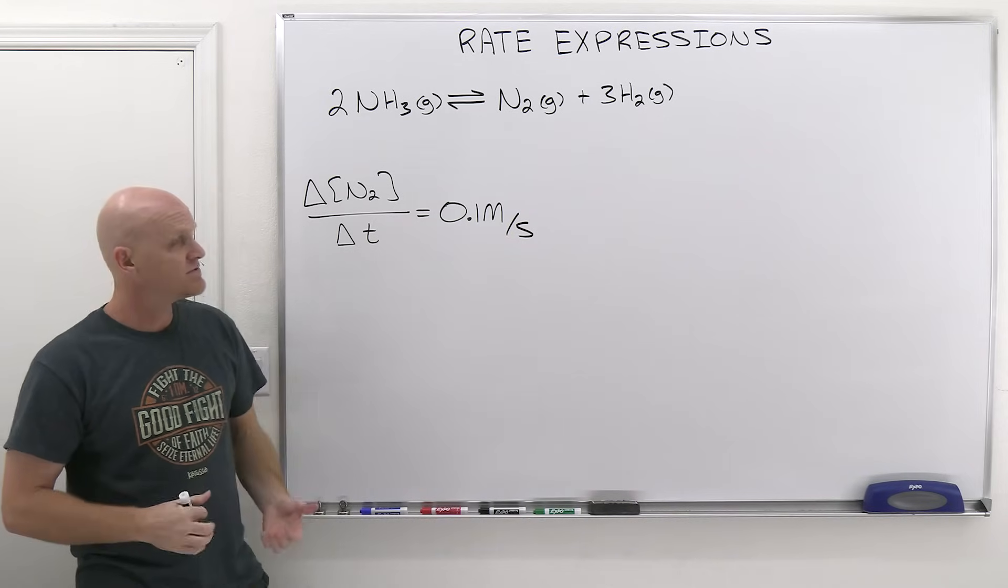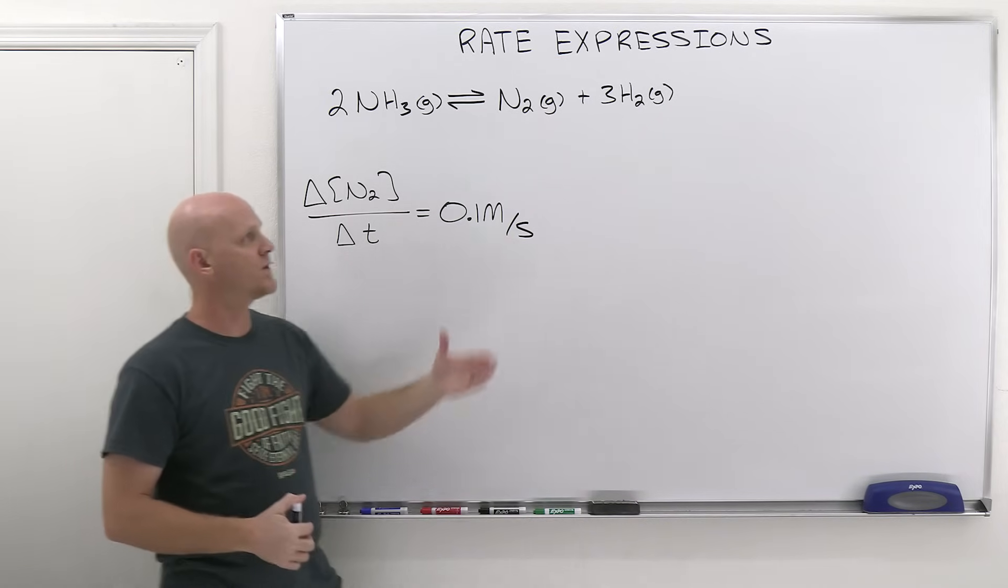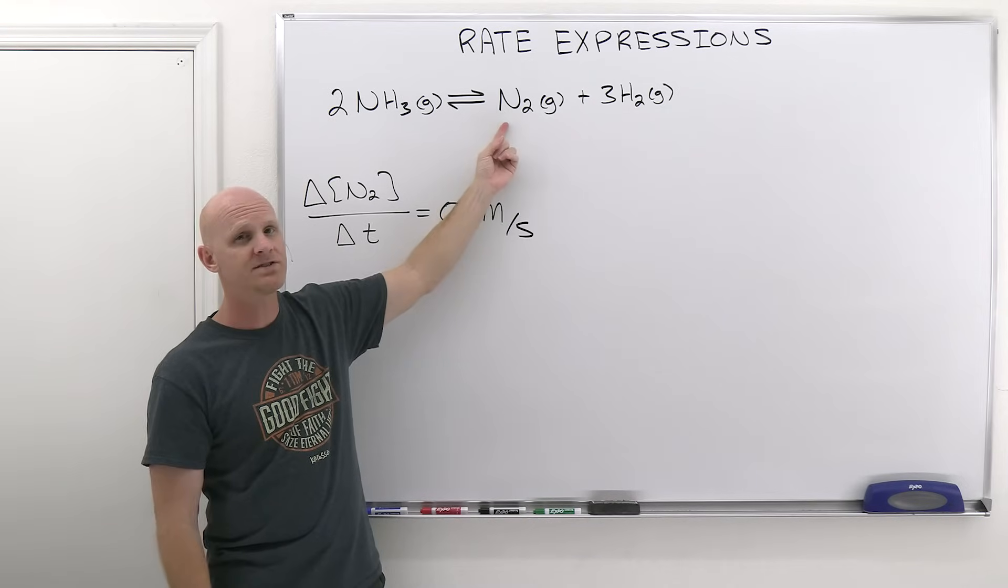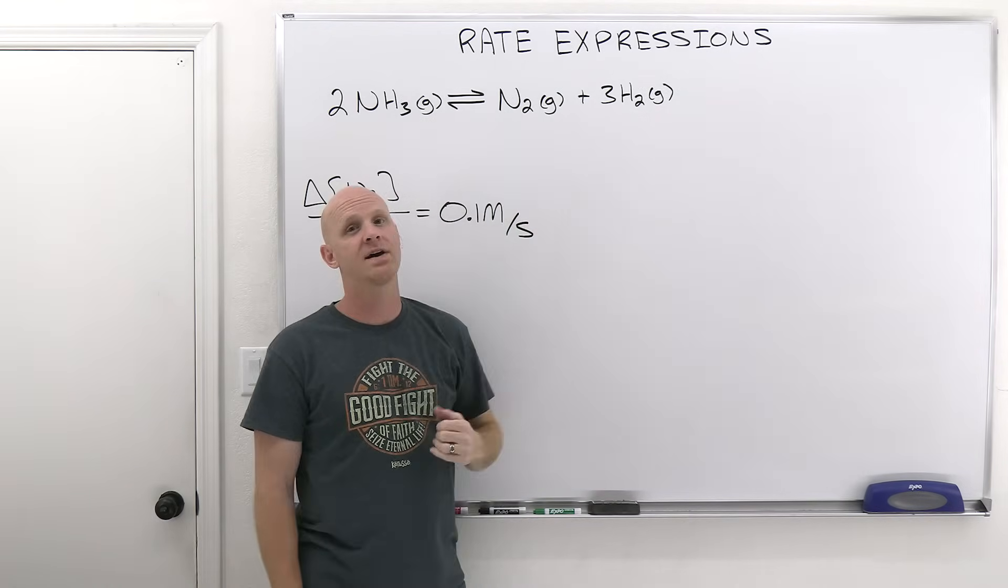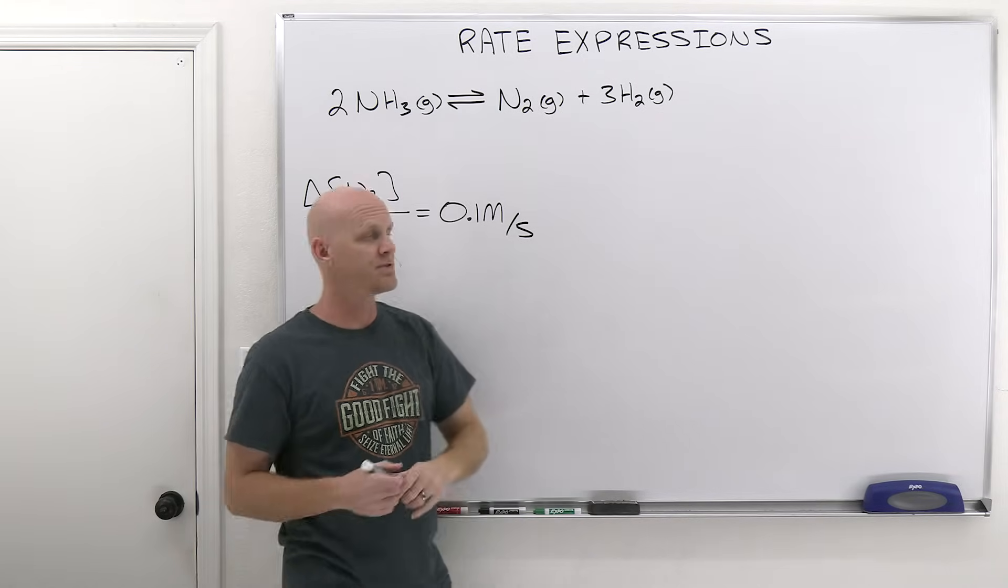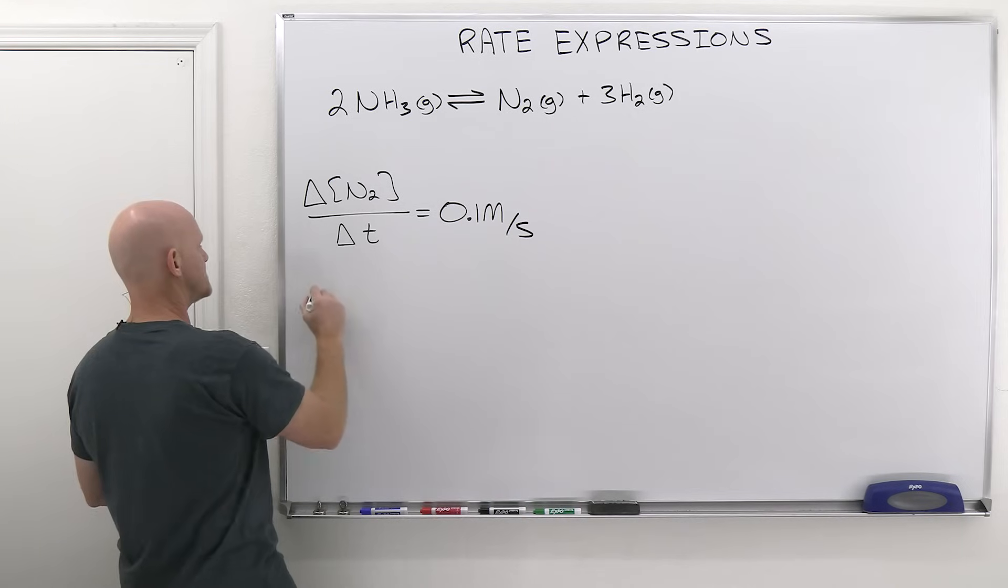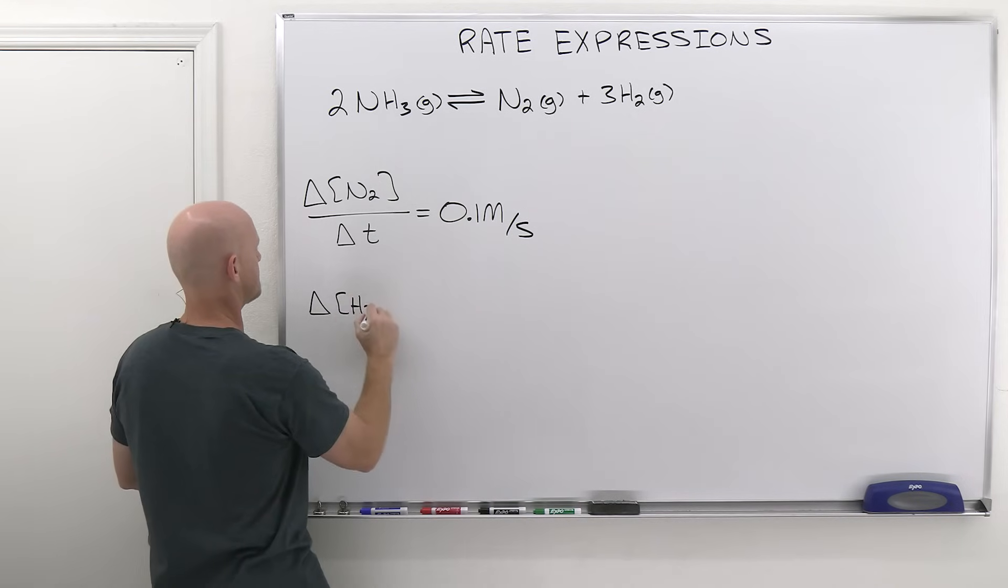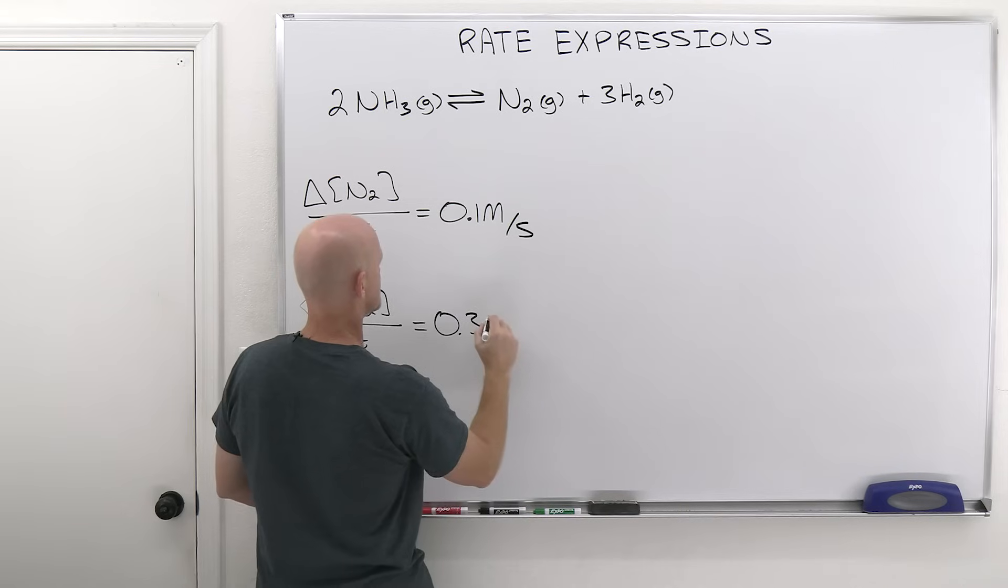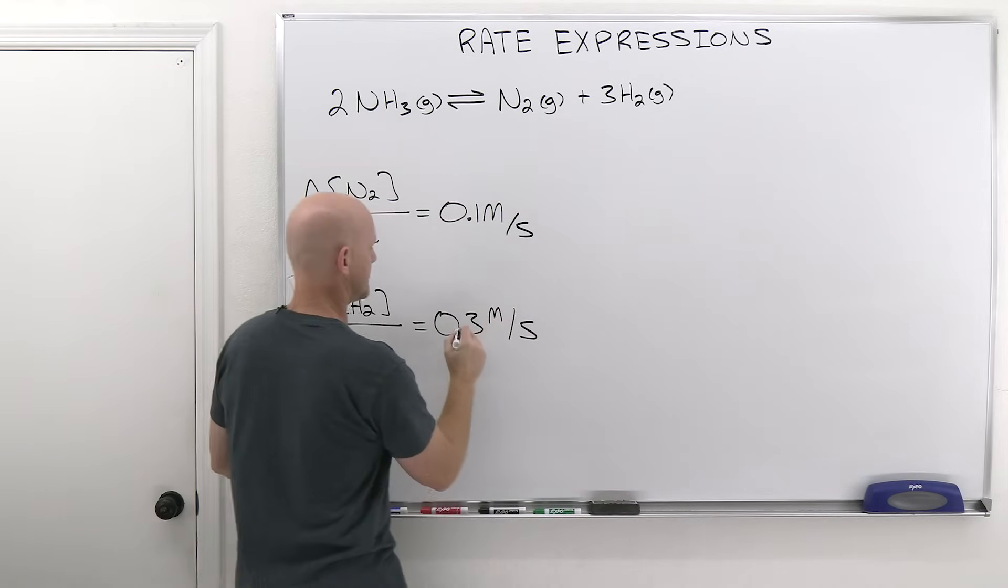So my question for you is, what is the rate at which H2 is being produced? Well, we see that for every one mole of N2 being produced, we're going to produce three moles of H2, three times as many, which means it should have triple the rate. So if we take a look at the change in the concentration of H2 over the change in time, that should be triple that number, so 0.3 molar per second.